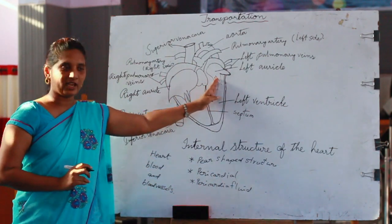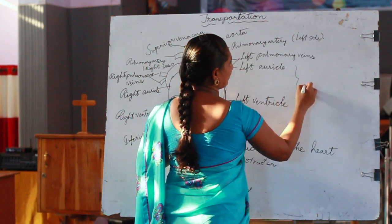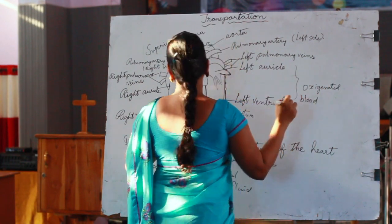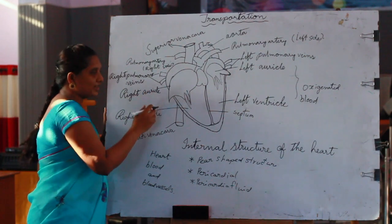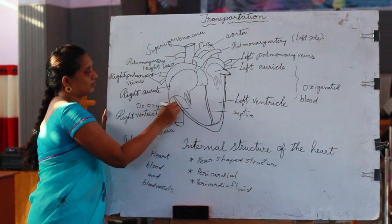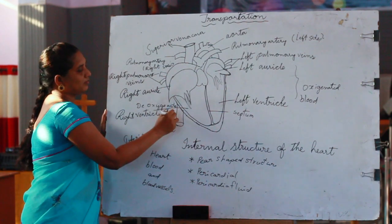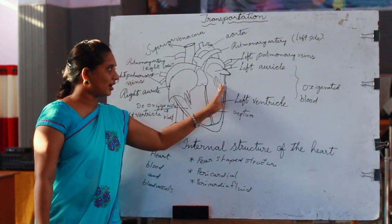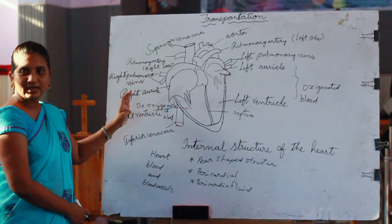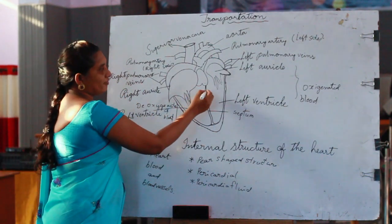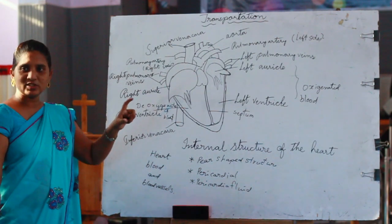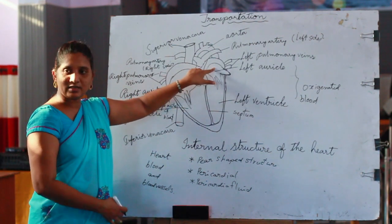The left side of the heart consists of oxygenated blood. The right atrium and right ventricle consist of deoxygenated blood. The walls of the ventricles are thicker compared to the atrial walls.